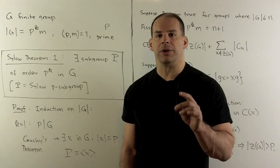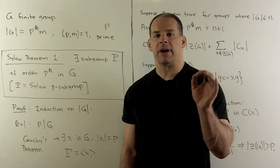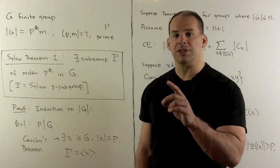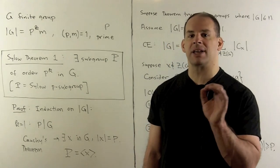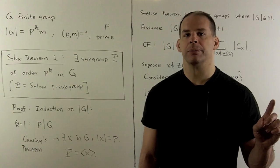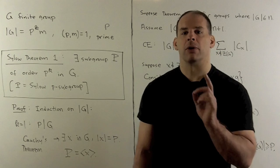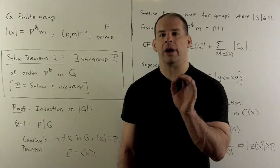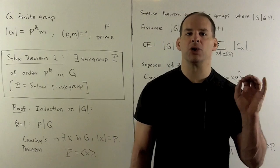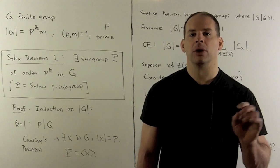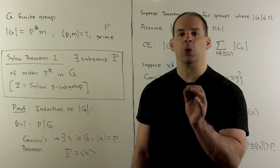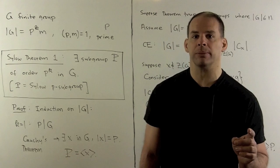For the proof of the Sylow theorems, we have options. For instance, in Herstein's Topics in Algebra, he gives several proofs. For us, we don't want any fancy machinery. We just want to use elementary methods, including group actions and the class equation.